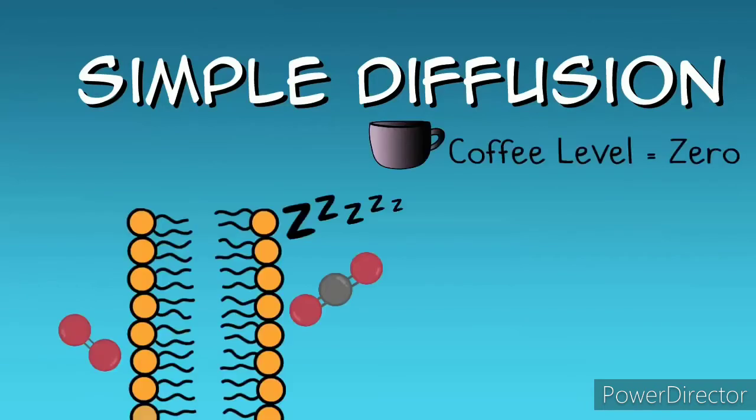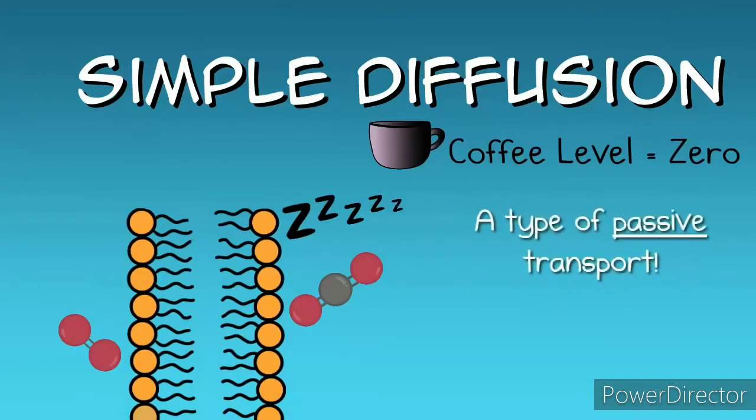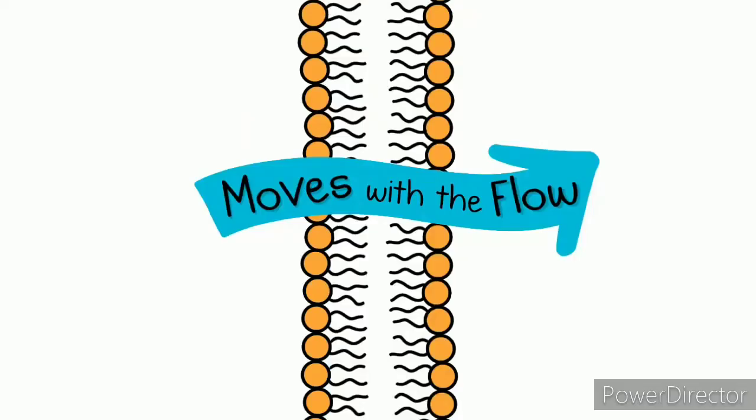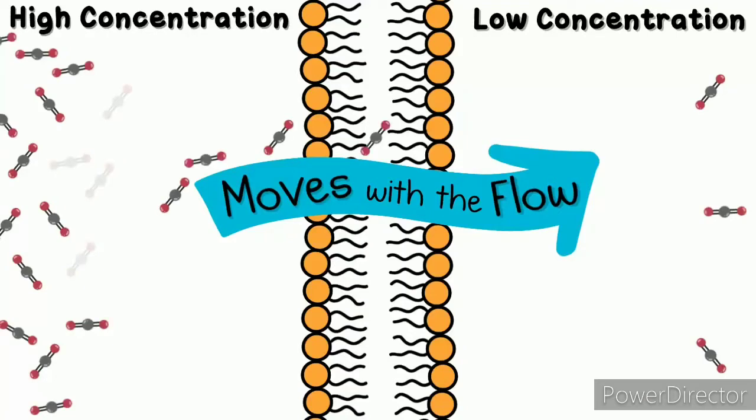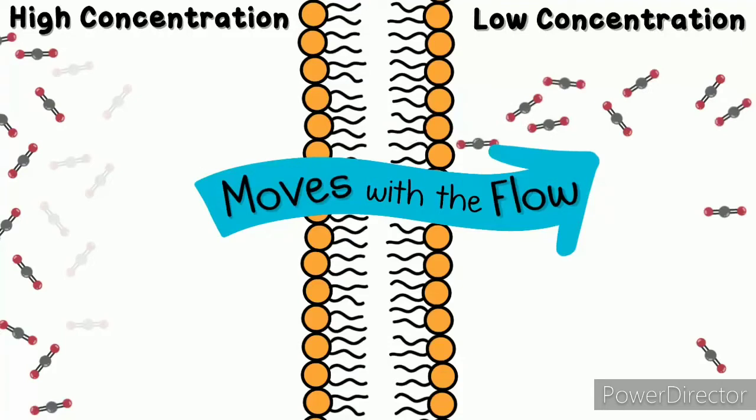Simple diffusion doesn't take any energy to force molecules in or out, so it's known as passive transport. Simple diffusion moves with the concentration gradient. To help understand concentration, imagine a room filled with little bouncy balls and you open the door into a hallway with no bouncy balls — some will spill out. The room has a high concentration, so it spills into an area of low concentration in the hallway. This is the concentration gradient: going from high to low concentration.